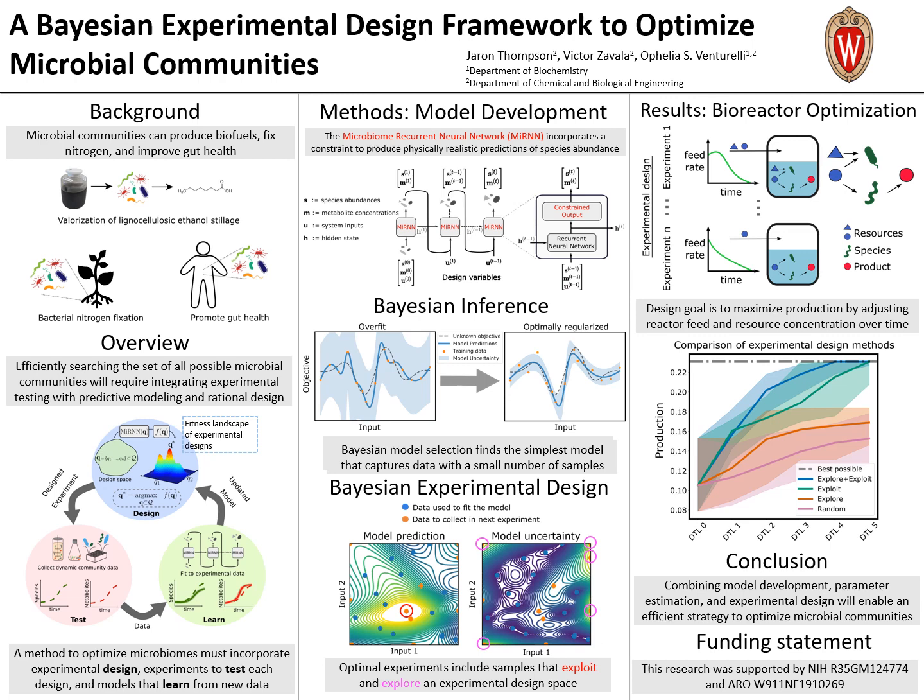The title of my poster is A Bayesian Experimental Design Framework to Optimize Microbial Communities. The design of functional microbial communities has enormous potential, including the valorization of waste to produce biofuels, the ability to fix nitrogen in soil to improve agricultural yields, and the ability to modulate host gut health.